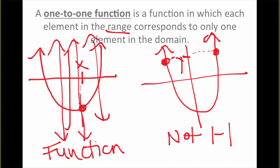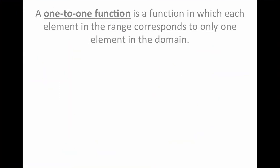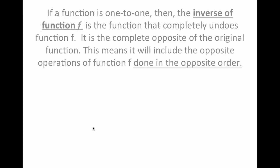In order for something to be one-to-one, it has to pass not only the vertical line test but also the horizontal line test. We're going to use that to determine whether or not something has an inverse. The only way that something can have an inverse is if it is one-to-one.